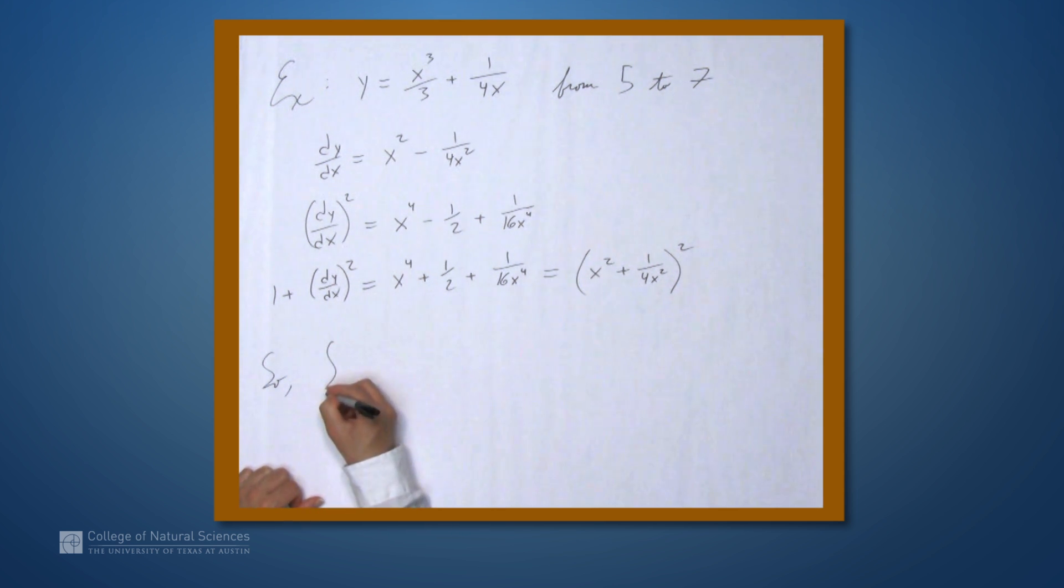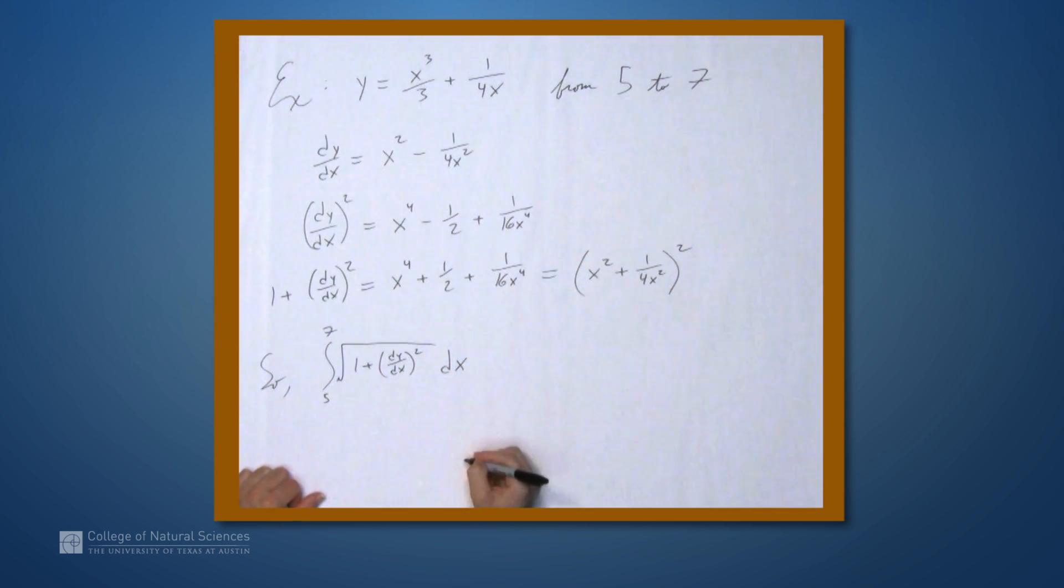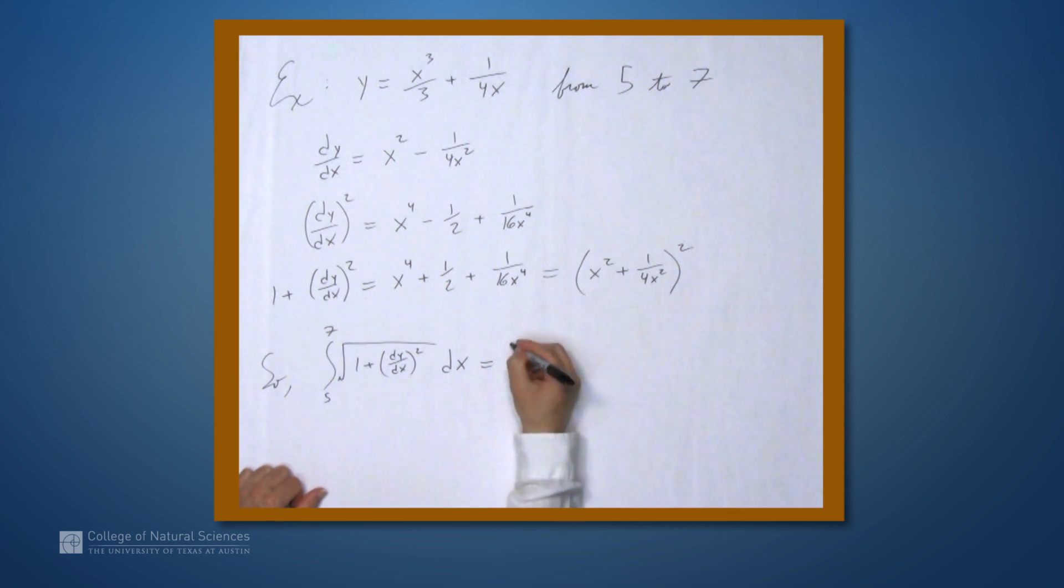So, the integral from 5 to 7 of the square root of 1 plus dy dx squared dx is the integral from 5 to 7 of the square root of this thing.